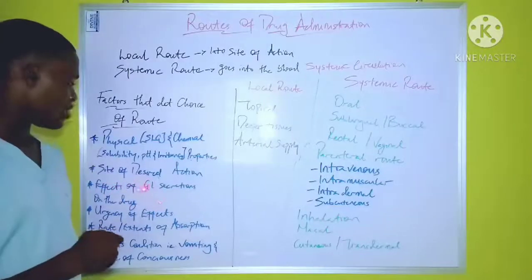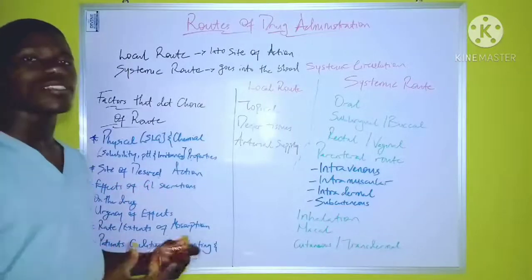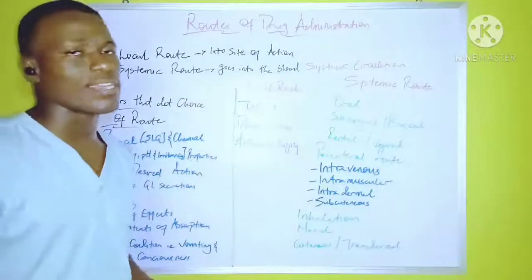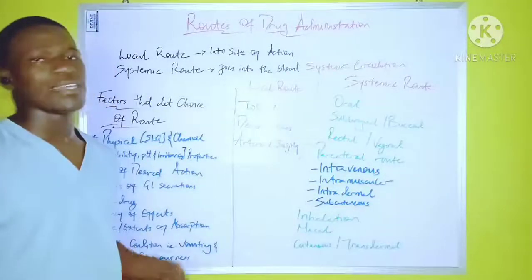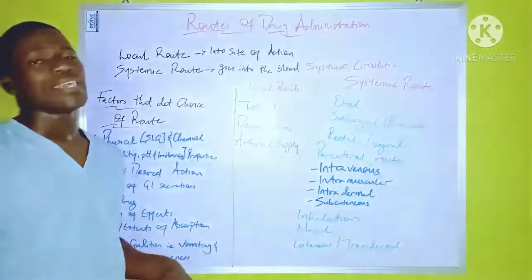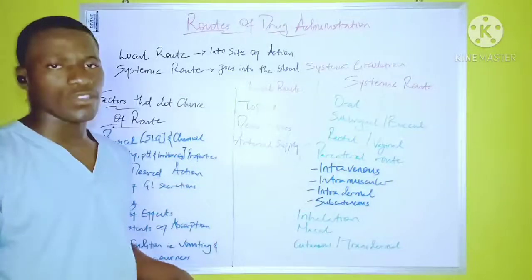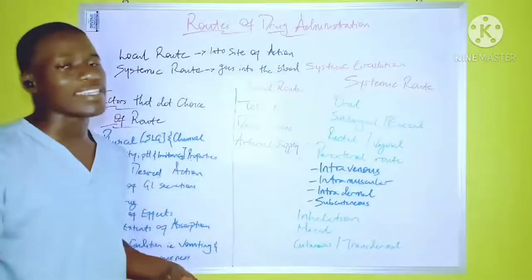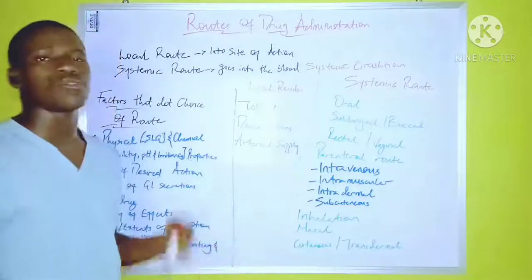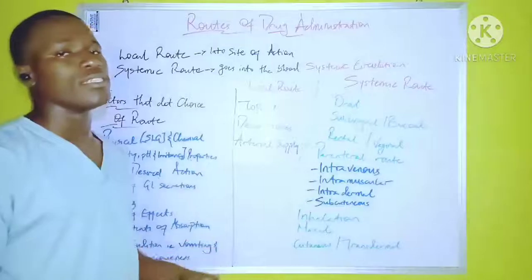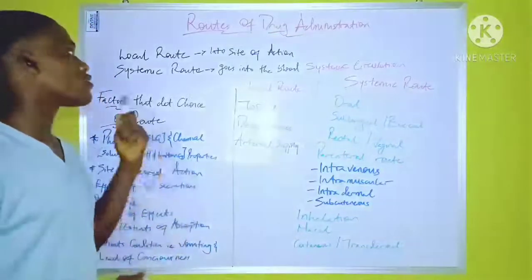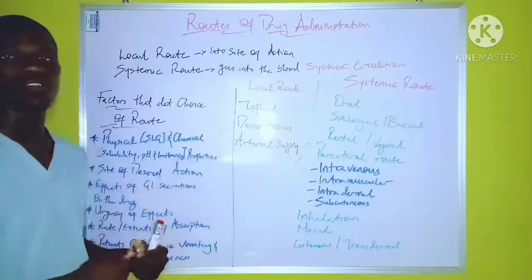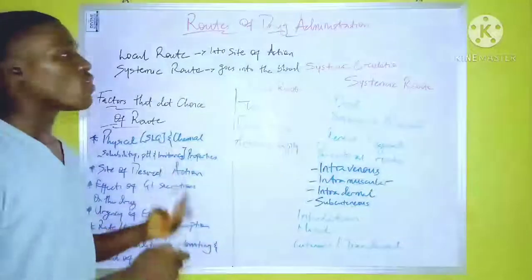The next factor is the effect of GI secretion — that is, gastrointestinal secretion. The secretion of the GI tract, including the stomach content, the gastric juice, and others, have effects on various kinds of drugs. So if these drugs are affected by GI secretions, they are not advisable to be administered through the oral route or other systemic routes like the oral route.